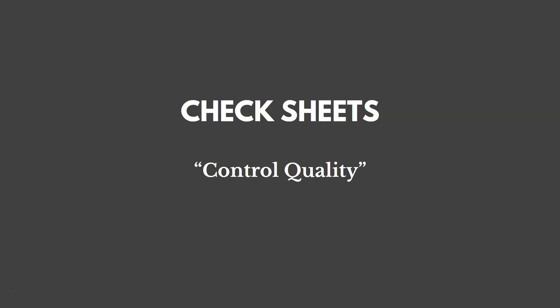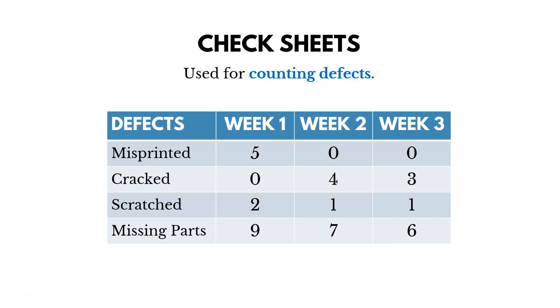Another tool we could use in this quality knowledge area is check sheets, used in Control Quality. They are used for counting when gathering data about a potential quality problem. There's nothing overly scientific about this — you're just trying to gather data about quality issues you see on your project. These are examples of different tools you could use in this knowledge area, and you want to be familiar with the purpose of each of them.